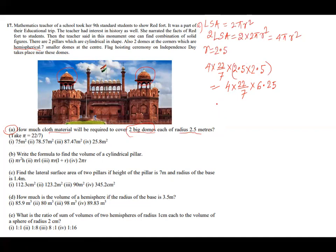So what you are getting? You are getting 4 into 22 by 7 multiplies 6.25. 2.5 multiplies 2.5 gives you 6.25. Now how I am calculating? You multiply 4 with 6.25, you will get 25. Then 22 by 7, divide it and you get 3.143. If you don't like to divide, just remember 22 by 7 as 3.143. Then you multiply. 25 multiplies 3.143. So 78.57.